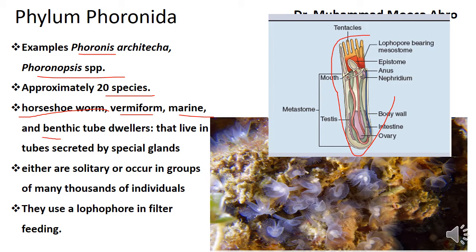They form a tube and in that tube they live. That is why they are known as benthic tube dwellers. They live in a tube secreted by a special gland.